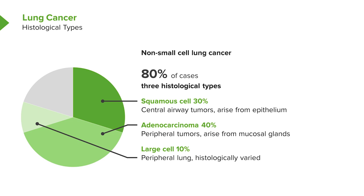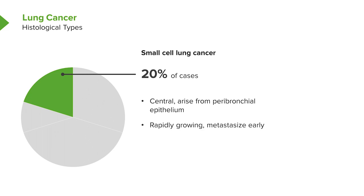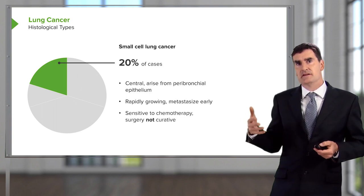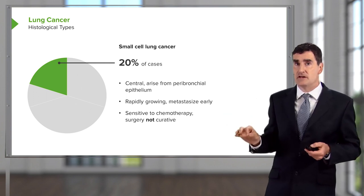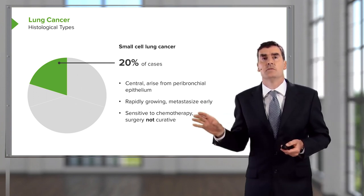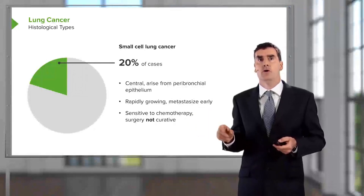The histology of large cell lung cancers is varied. The other type of lung cancer is small cell lung cancer, which accounts for 20% of all cases. Like squamous cell cancers, they tend to be central tumors rising in the peribronchial epithelium, and they grow rapidly and metastasize early. They are sensitive to chemotherapy, but because they grow so rapidly and because even at presentation most patients will have metastasis somewhere — even if not detectable by radiology — surgery is not usually curative and not offered.